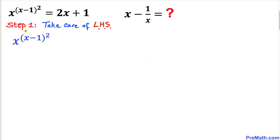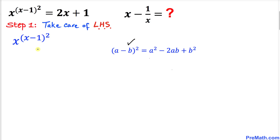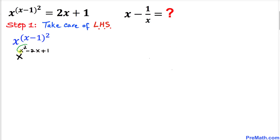Now let's focus on this part (x minus 1) whole square and we are going to use the binomial formula (a minus b) squared. So this can be written as x power (x squared minus 2x plus 1). Now let's focus on this exponent part x squared minus 2x plus 1, which I have copied down here, and let's manipulate it.